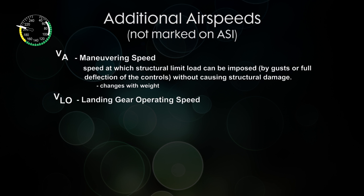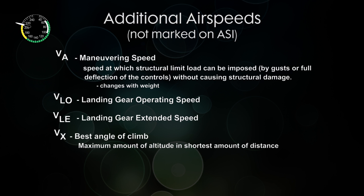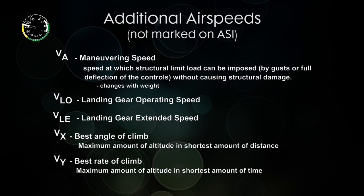VLO is Landing Gear Operating Speed, and this is the maximum speed at which you can lower and extend the gear without causing any damage. VLE is the Landing Gear Extended Speed, this is the maximum speed you can fly with the Landing Gear Extended. VX is the best angle of climb. If you climb at this speed, you will get the most altitude within the shortest amount of horizontal distance. And VY is the best rate of climb. You will get the most altitude in the shortest amount of time.